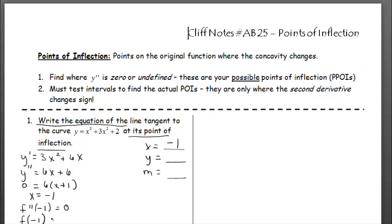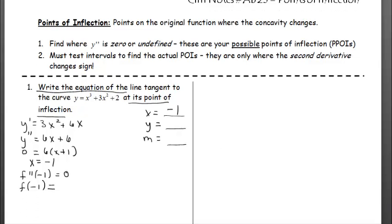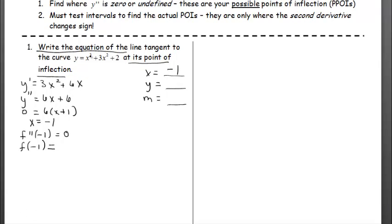Let's find the functional value at negative one. Negative one gives negative one plus three plus two — that's four. So now we have our point of inflection at (-1, 4). This is where the concavity is going to change.